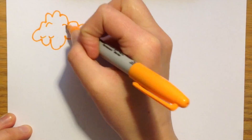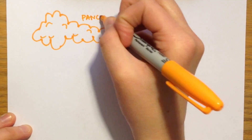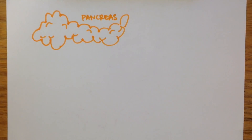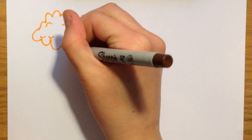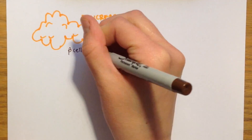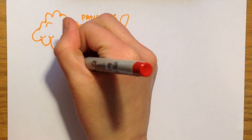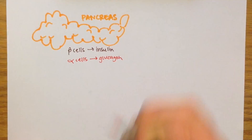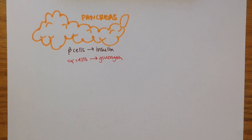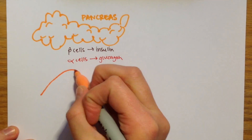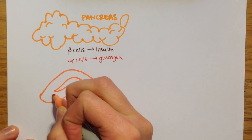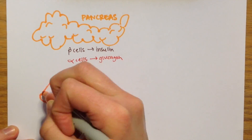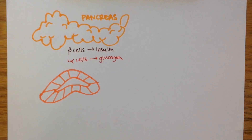Two of these hormones are secreted from cells in the pancreas: insulin is secreted by the beta cells, and glucagon is secreted by the alpha cells. Two of the other hormones are secreted from the adrenal gland above the kidney. The one we will focus on here is epinephrine, which is secreted from the medulla.